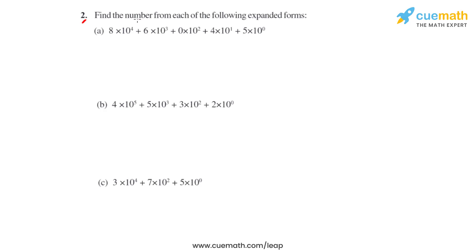Question number two says to find the number from each of the following expanded forms. In the first part, we have 8 times 10 raised to 4, so we can write it as 8 followed by 4 zeros. Plus 6 times 10 raised to 3, so that can be written as 6 followed by 3 zeros. Plus 0 times 10 raised to 2 — since 0 multiplied by anything gives 0, we need not write this.